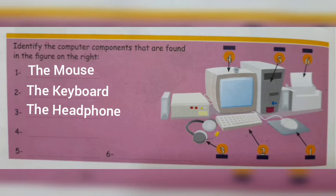And what about screen? Number four is the screen. What is the use of screen? In the screen we can see pictures, we can see text, we can see movies. It is the display of the computer.